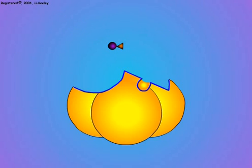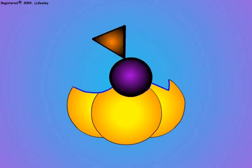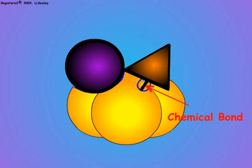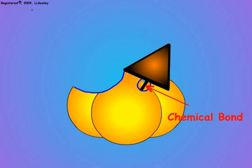Acetylcholinesterase destroys acetylcholine by binding it to its enzymatic active site. The acetylcholine has a three-dimensional structure that fits into the active site of the enzyme like a key fits into a lock. The acetate group binds to the active site and the choline group is split from the acetate, destroying the neurotransmitter activity of the acetylcholine.